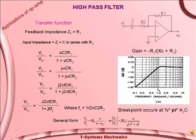Since, in this case, the high frequencies are amplified, it is called a high pass filter. The response of a high pass filter is also shown on the slide, from which it is very clear that the gain for low frequencies is low and then increases for high frequencies.